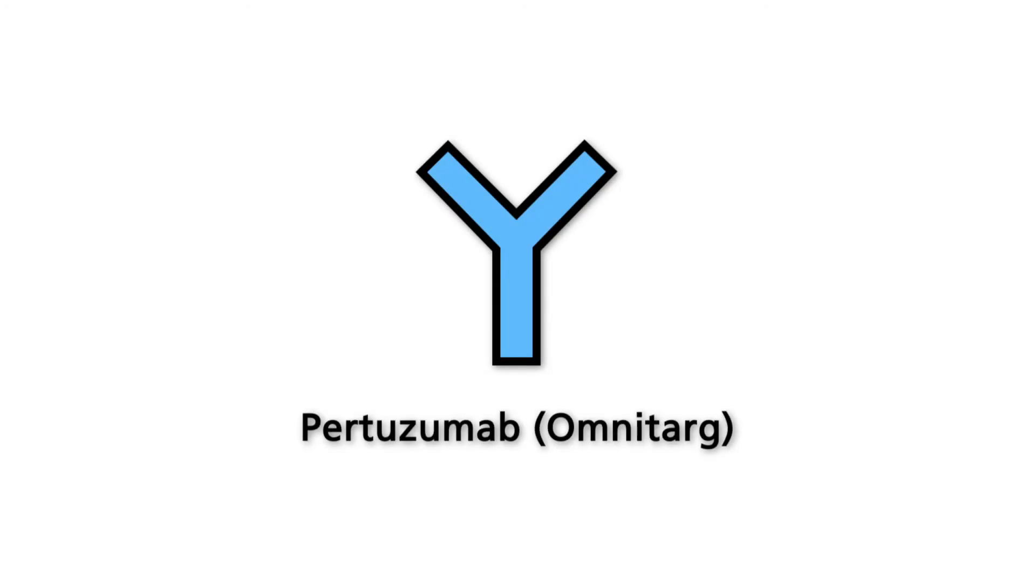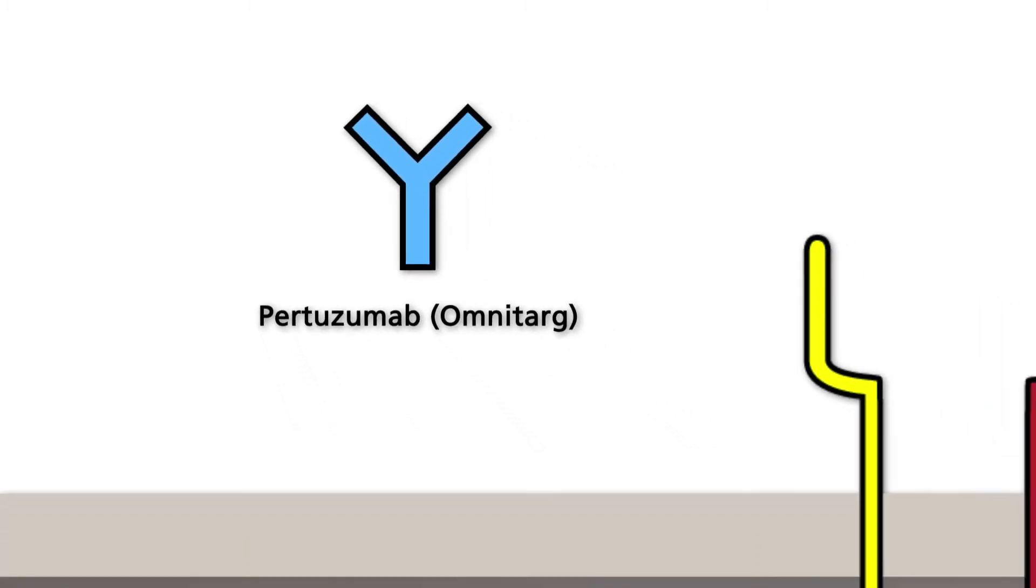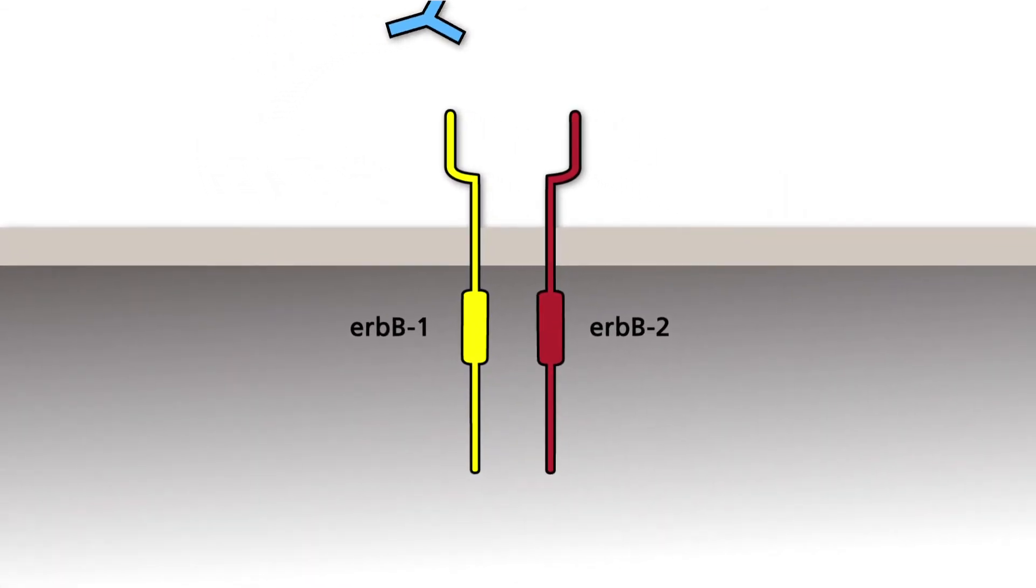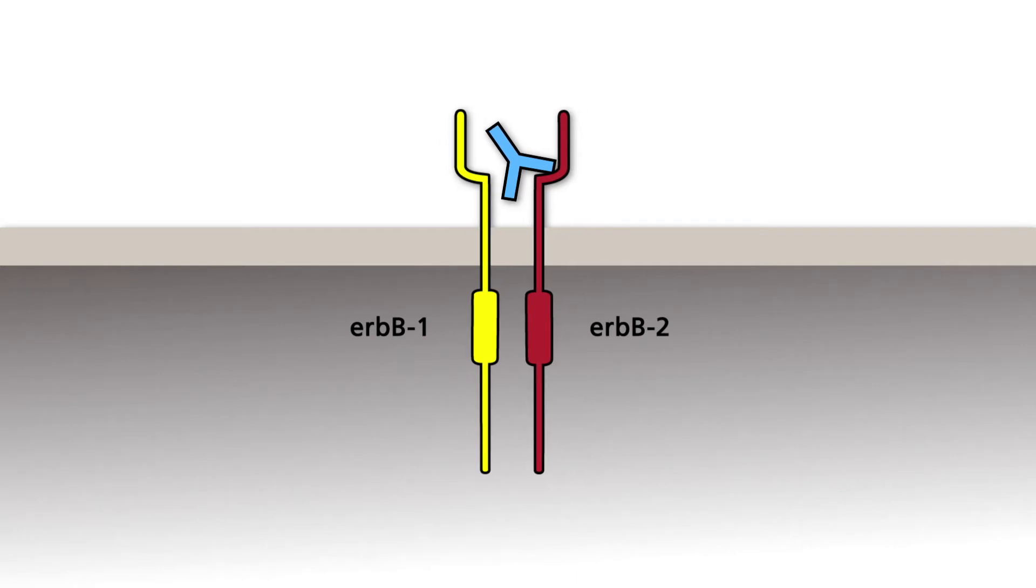The antibody Pertuzumab, registered commercially as Omnitarg, binds to an antigenic site within the extracellular domain of the EGF receptor ERB-B2 and inhibits its heterodimerization with all other members of the EGF receptor family.